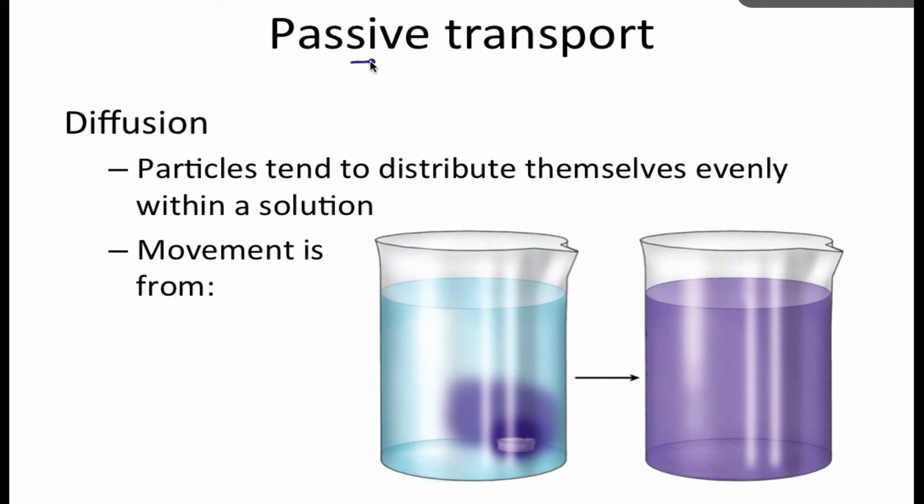Passive transport, again, is no ATP required. An example of passive transport is diffusion. Particles tend to move or distribute themselves evenly within a solution. Movement is from areas of high concentration to low concentration.